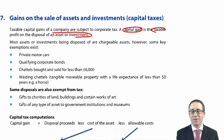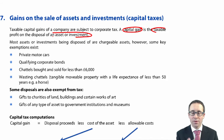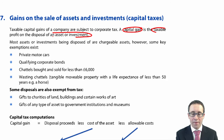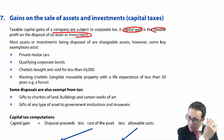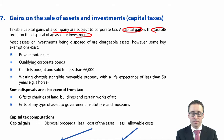Most assets are chargeable assets. When we talk about chargeable assets, that means we are going to pay capital gains tax. There are some exemptions: private motor cars, qualifying corporate bonds, chattels bought and sold for less than $6,000, and wasting chattels.